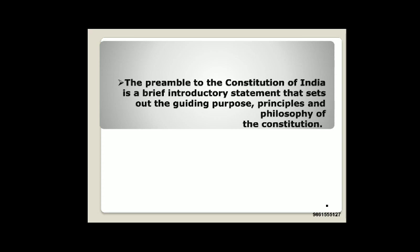Basically, the preamble is a summary of the Constitution — it gives us a complete brief of the constitution. For example, the preamble discusses about justice, liberty, equality, and fraternity. These are the key ideas which are there in our constitution, and that is why those keywords appear in the preamble itself.